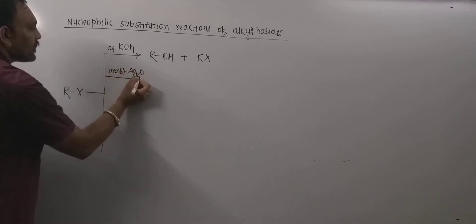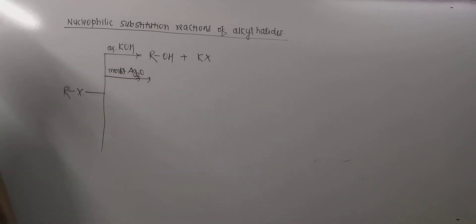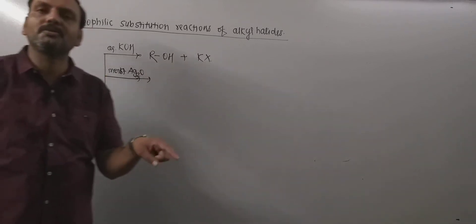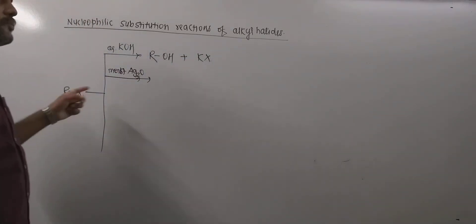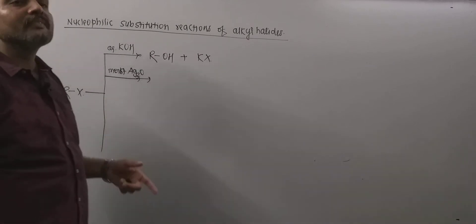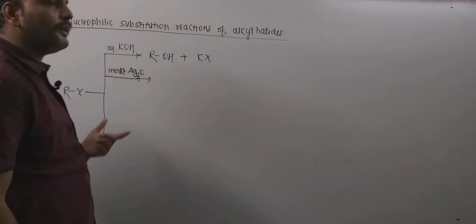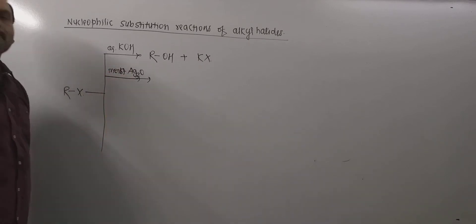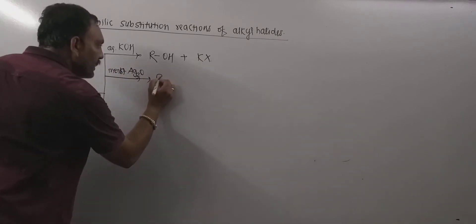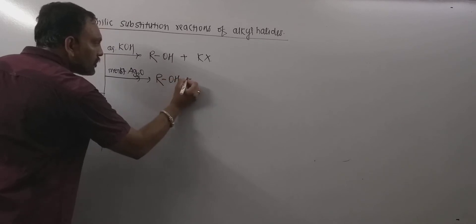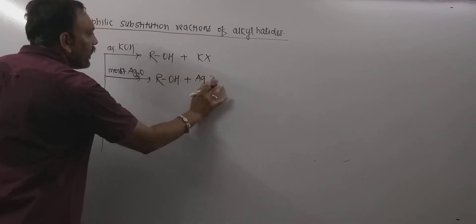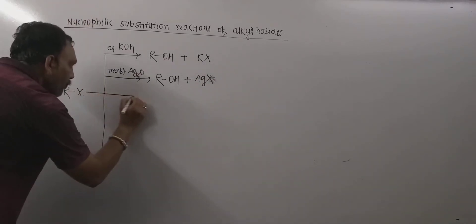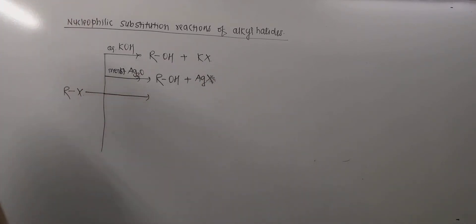Secondly, the reaction with moist silver oxide. When alkyl halides are boiled with moist silver oxide — remember silver oxide is a metallic oxide, so when dissolved in water it gives the metallic hydroxide, that is silver hydroxide — alcohols are obtained along with silver halides as a byproduct.